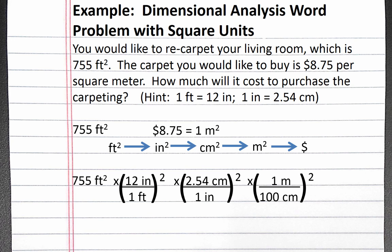Next, we'll convert from square meters to dollars using $8.75 equals 1 square meter. We do not need to square this conversion factor because the conversion factor itself already contains square meters. If you complete this calculation, you should get $613.74.